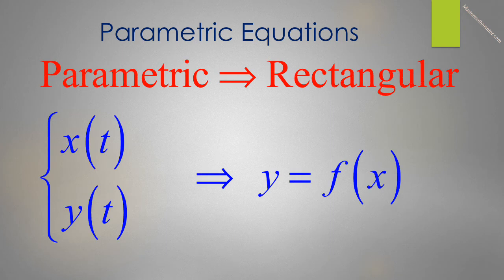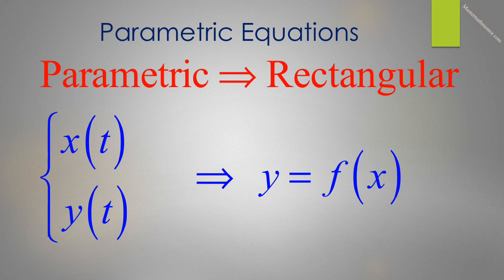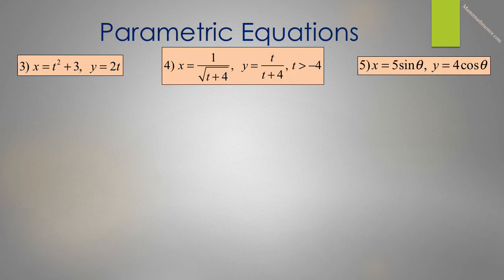Many times when a parametric equation is given, we wish only to sketch the general shape of the plane curve. In that case, we wish to eliminate the parameter and create a rectangular equation in the form y equals f of x. The technique to accomplish this is to solve for the parameter in one of the parametric equations. You usually choose the easiest one to do so, and then replace the result in the other equation. In problems 3, 4, and 5, we wish to generate rectangular equations by eliminating the parameter.